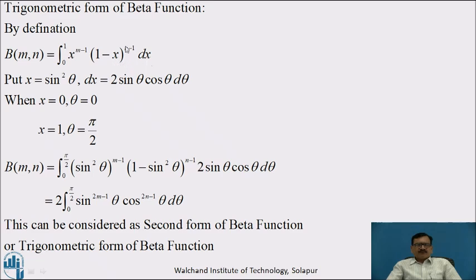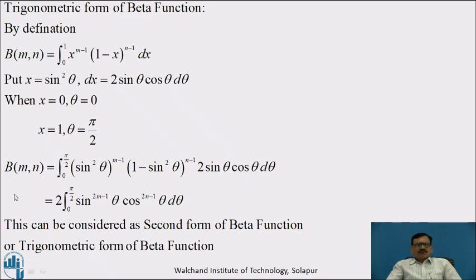Now to express this in trigonometric form of Beta Function, we substitute x equal to sin²θ, so that dx equal to 2 sinθ cosθ dθ. Accordingly, we change the limits: when x equal to 0, sin²θ equal to 0 means θ equal to 0; and when x equal to 1, sin²θ equal to 1 implies θ equal to π/2.